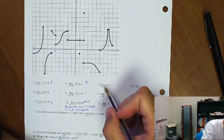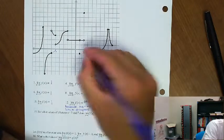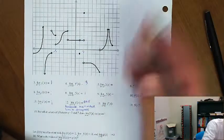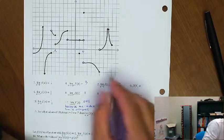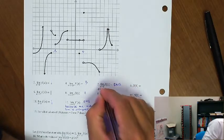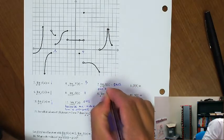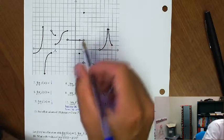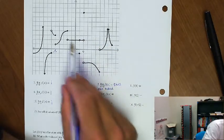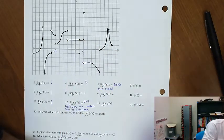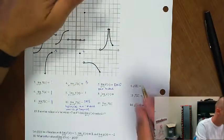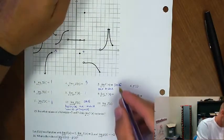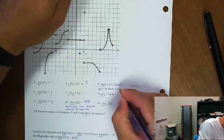The limit as x approaches 2 of f of x — here's x equals 2 — that one's not going to exist. Because from the positive side we're approaching negative 3, and from the negative side we're approaching positive 2. One-sided limits disagree.